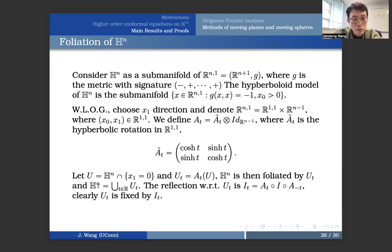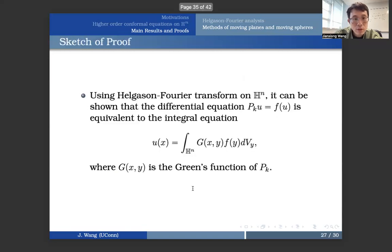So now if we let U be equal to HN intersecting with x1 equals 0 and Ut be At of U, then we know HN is going to be foliated by Ut. And U is the infinite union of this Ut. And we can also define the reflection with respect to Ut, which is going to be It equals At composite I composite A minus T. So clearly this Ut is fixed by It. So just to understand, you have some certain foliation structure and the symmetry with respect to this space HN.